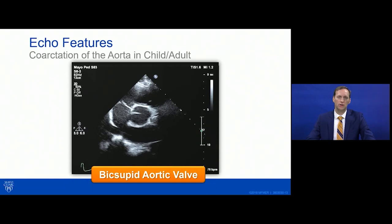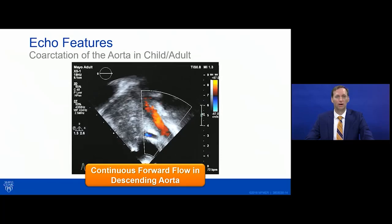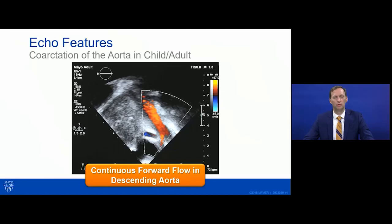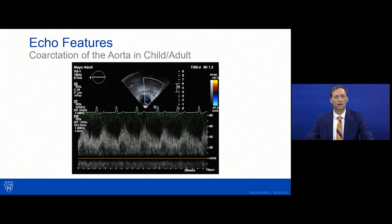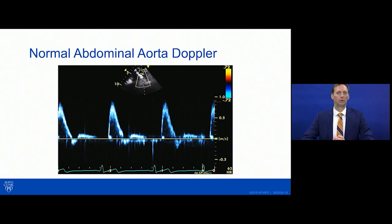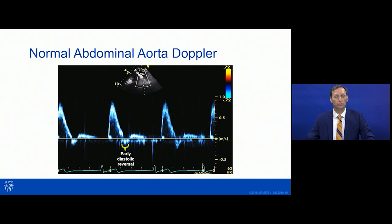On echo, we diagnose coarctation almost exclusively this way. A bicuspid aortic valve may or may not be present. Starting from a subcostal approach — as we do at Mayo Clinic — the abdominal aorta Doppler signal may be the first echocardiographic sign of significant coarctation. You look for continuous forward flow that never quite returns to baseline — the sawtooth jagged pattern — compared to a normal abdominal aorta signal with brisk systolic upstroke, early diastolic reversal, and late diastolic forward flow.